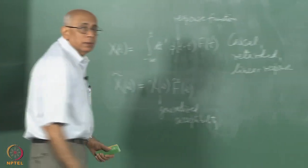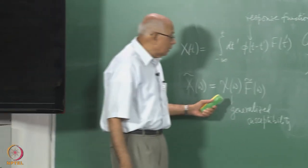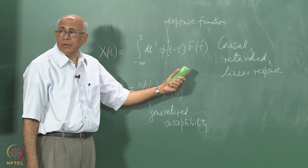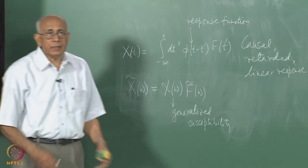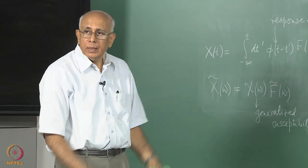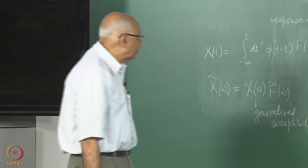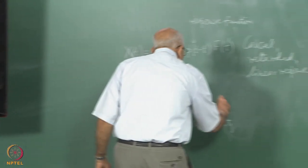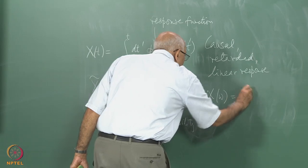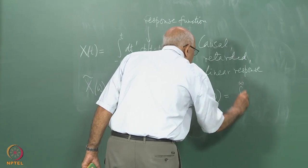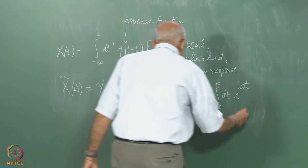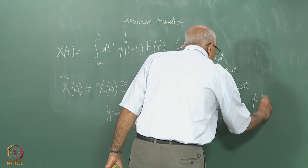The question is: can I write an expression for χ(ω) from the Fourier transform? The answer is yes — a little manipulation gives χ(ω) equal to the integral from 0 to infinity of dt e^{iωt} φ(t). Note that φ(t) as it stands is defined only for positive values of its argument because of causality.